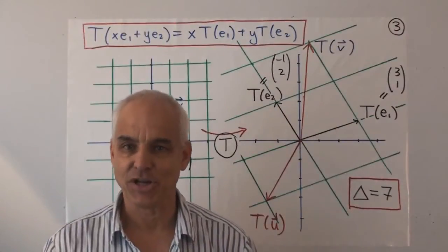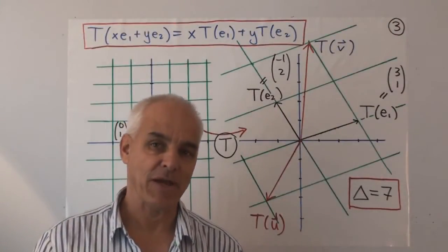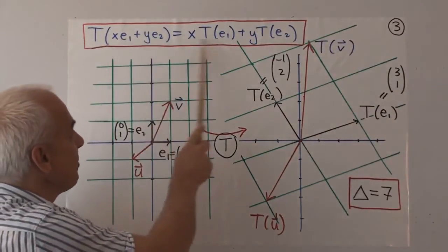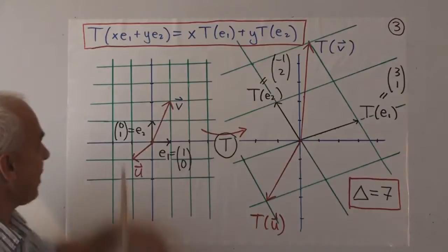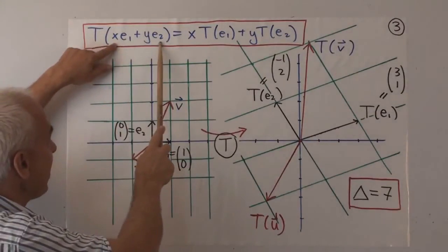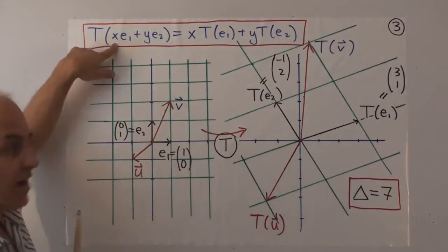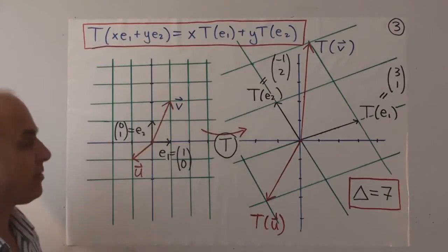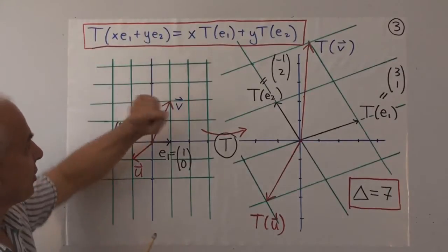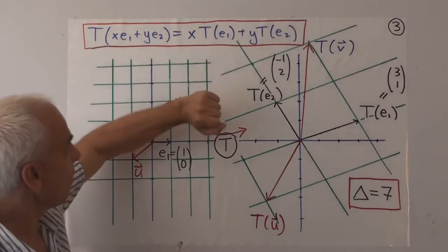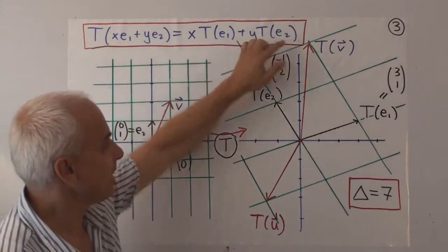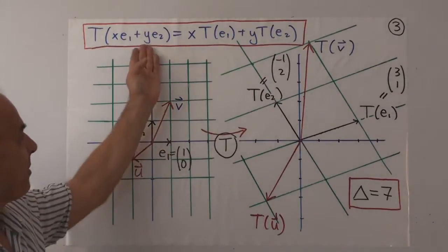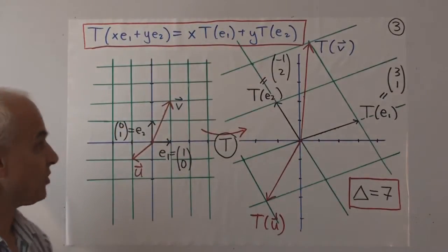Knowing that a transformation T is linear allows us to conclude this important rule: if we apply T to a combination X·E1 plus Y·E2, then that equals X times T of E1 plus Y times T of E2. That's a combination of both properties of a linear transformation.